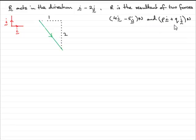Now to do that, what I'm going to do is first of all find out what R is as a vector by combining these two vectors.